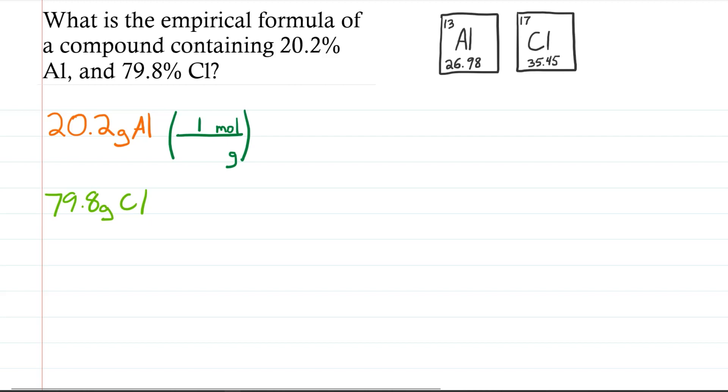How many moles? One mole. How many grams? Well, it depends on the molar mass of what we're talking about. We're talking about aluminum. So we're going to use the molar mass of aluminum, which is 26.98 grams. So punch that in our calculator, and we get that 20.2 grams of aluminum is 0.7487 moles.